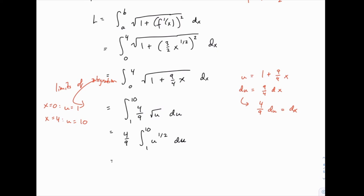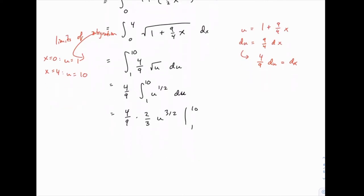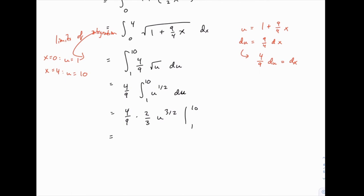So one more step to integrate. We have 4 ninths u to the 1 half. When integrated, it becomes u to the 3 halves divided by 3 halves, or times 2 thirds. And then we'll evaluate that from 1 to 10. So when you plug this in, 4 ninths times 2 thirds, we can rewrite as 8 over 27, and then we have 10 to the 3 halves minus 1 to the 3 halves.